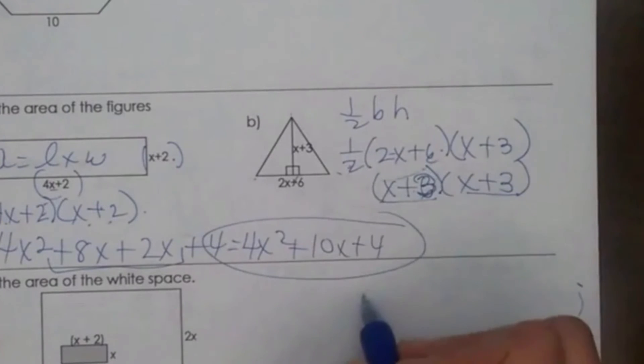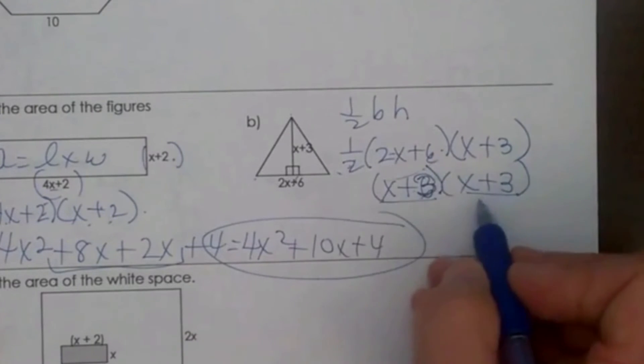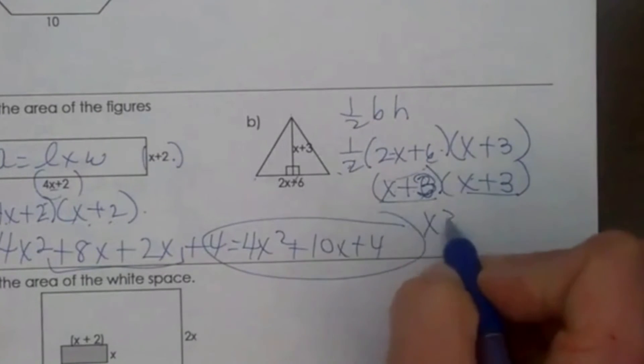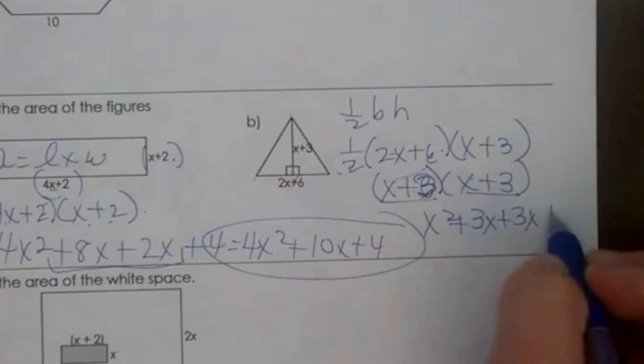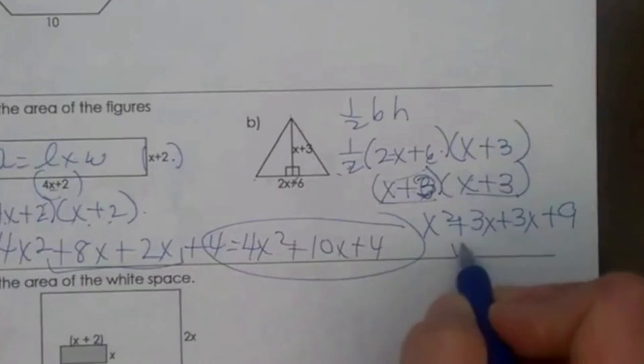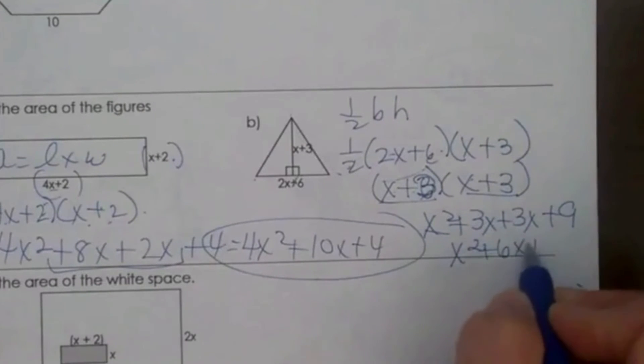So I just took half of each of the first binomial. Now I'm going to FOIL it. First, x squared. Outer, positive 3x. Inner, positive 3x. And last is positive 9. So my final answer ends up being x squared plus 6x plus 9.